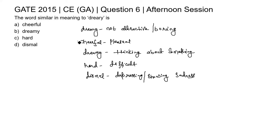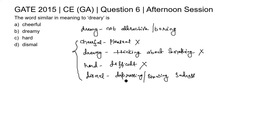We need to select which word gives a similar meaning to dreary. Cheerful means pleasant, which is almost an antonym of dreary, so it is not the correct word. Dreamy means thinking about something, which is not giving a similar meaning to dreary. Hard means difficult, which gives another meaning. Dismal means depressing or showing sadness, so dismal gives the similar meaning to dreary. Therefore, dismal is the correct answer.